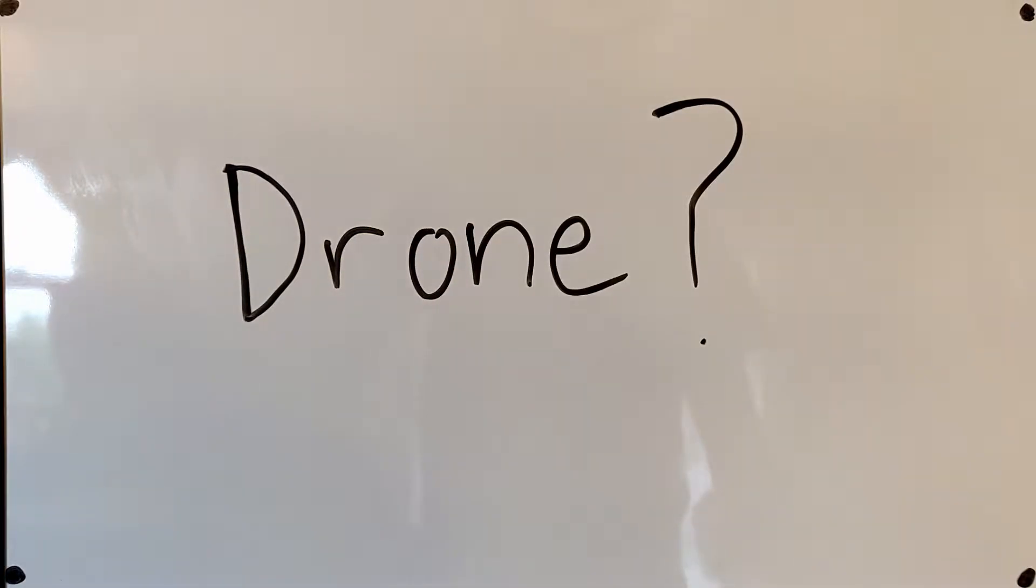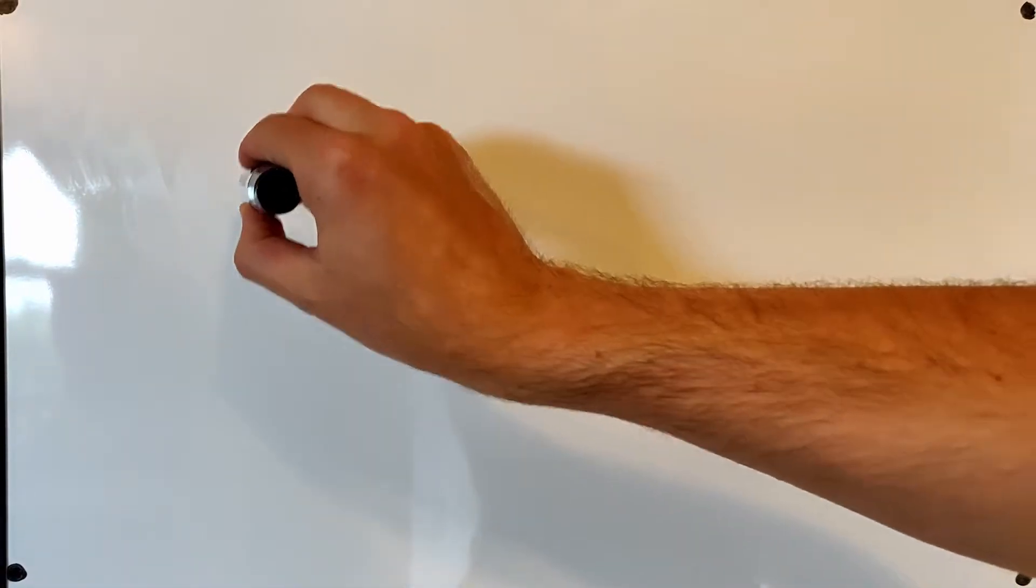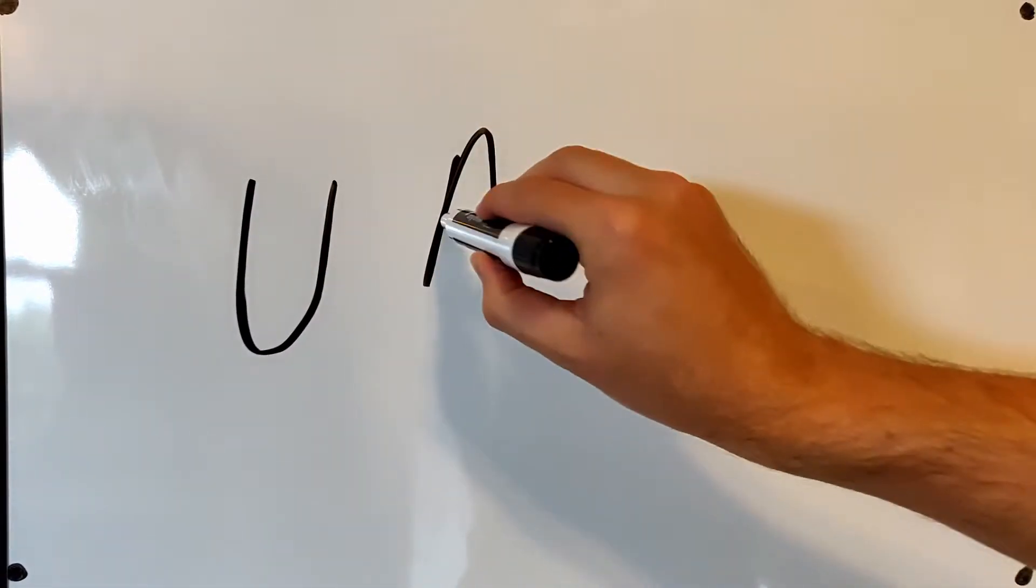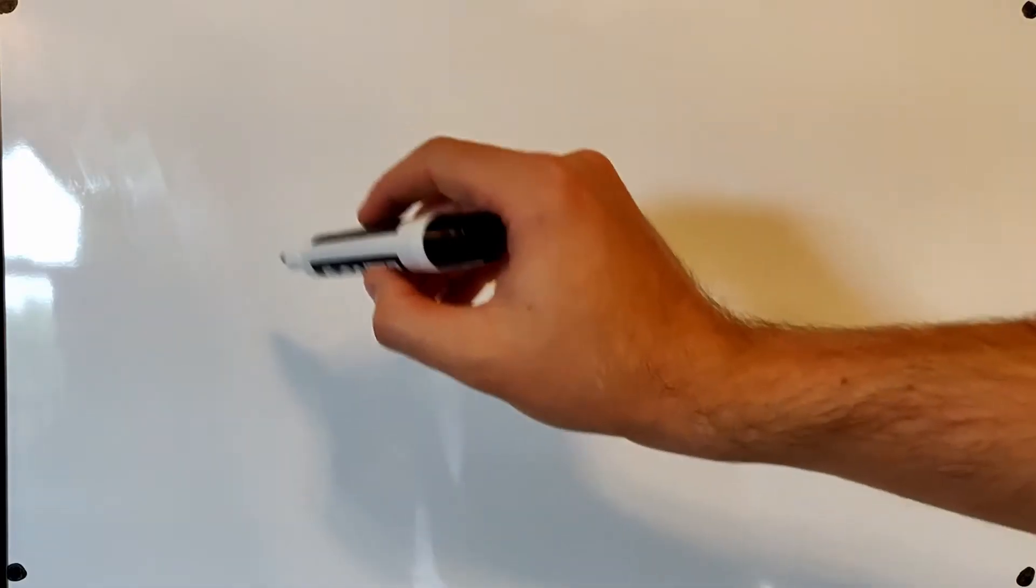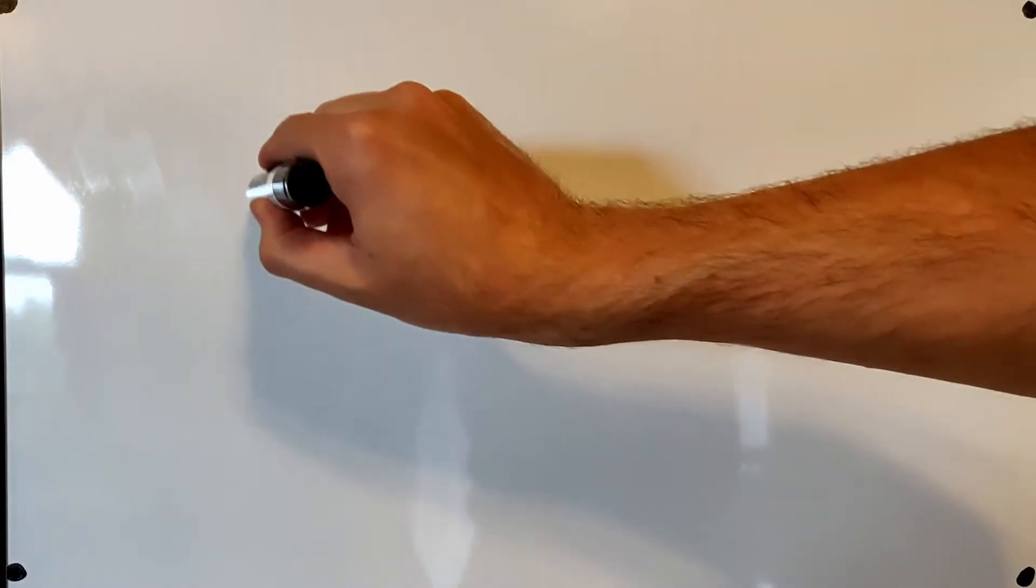So what is a drone? A drone could also be called a UAV which stands for Unmanned Aerial Vehicle, an aircraft piloted by remote control or onboard computers. So we know what a UAV is. What is a UAS?